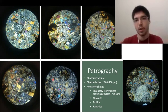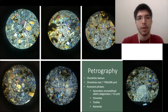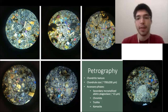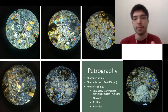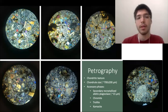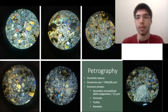All the chondrules are set in a fine-grained matrix, with opaque phases including iron-nickel metal such as kamacite, troilite, and chromite. Also of interest is a secondary recrystallized albitic plagioclase phase, averaging about 15 microns in size. The chondrules generally average around 700 microns, but there's a large range — some are about 200 microns, some are around 1,000 microns (about one millimeter).